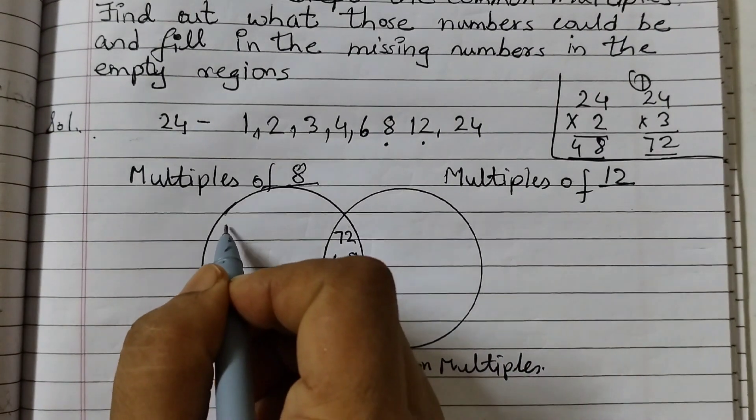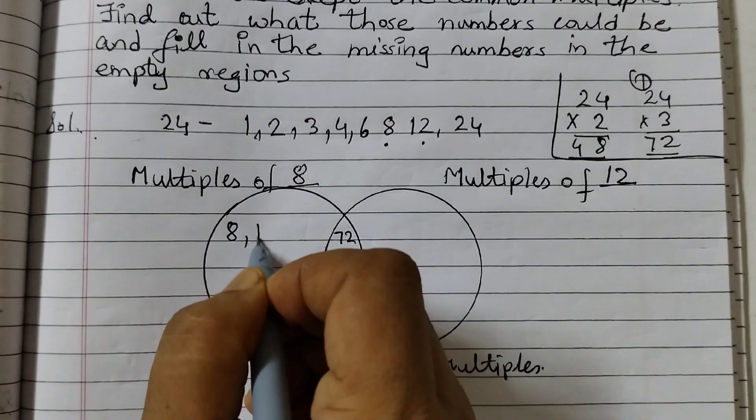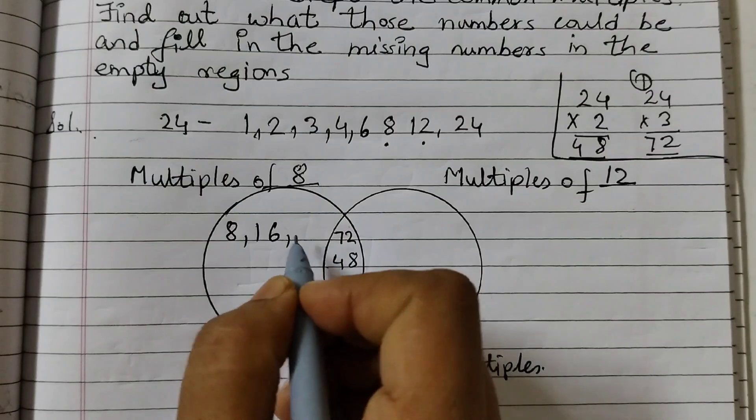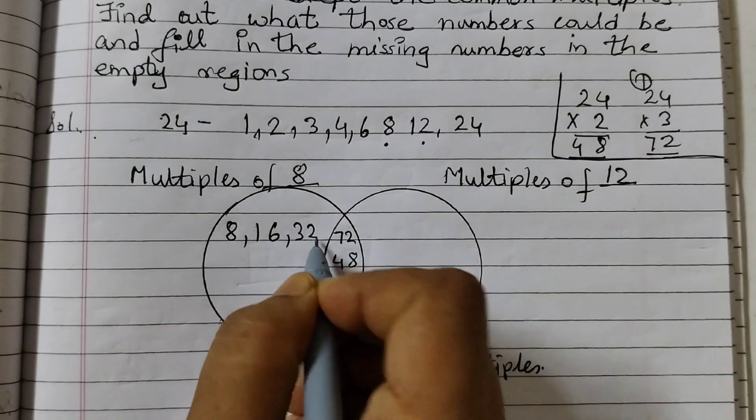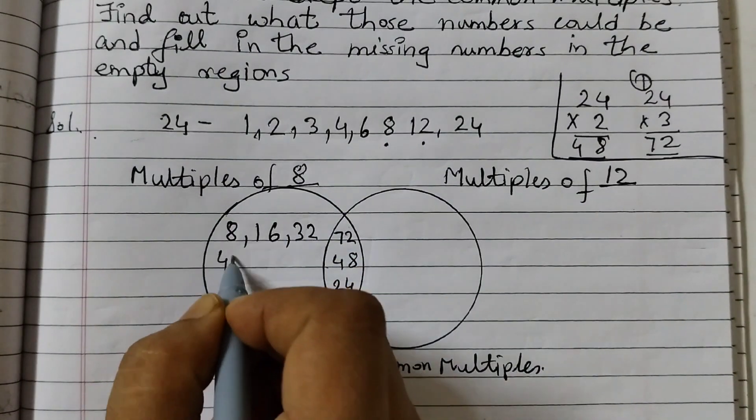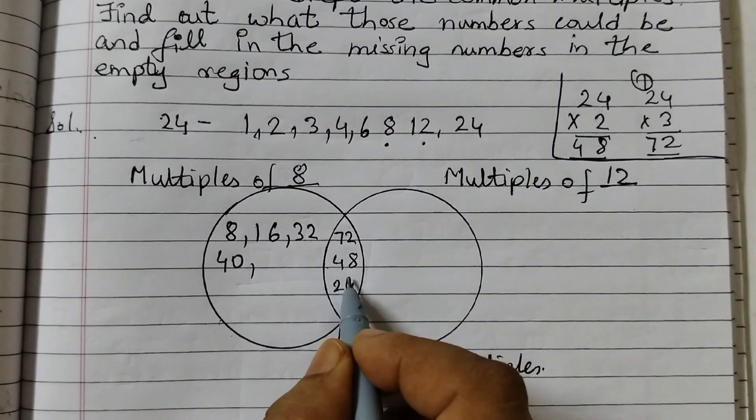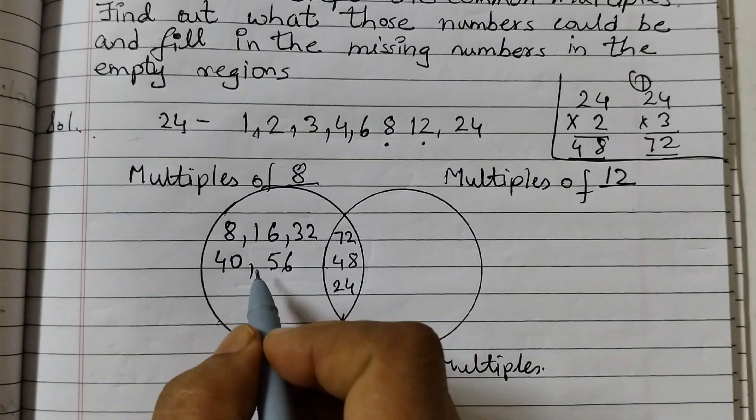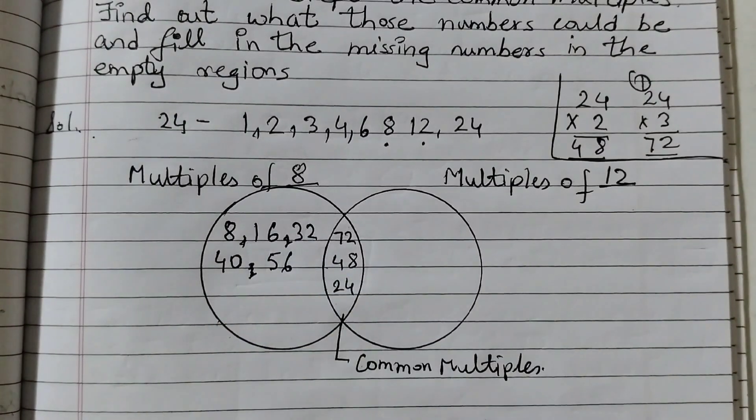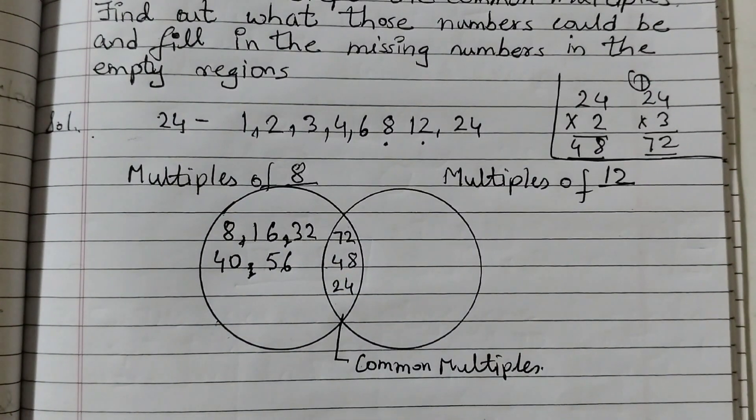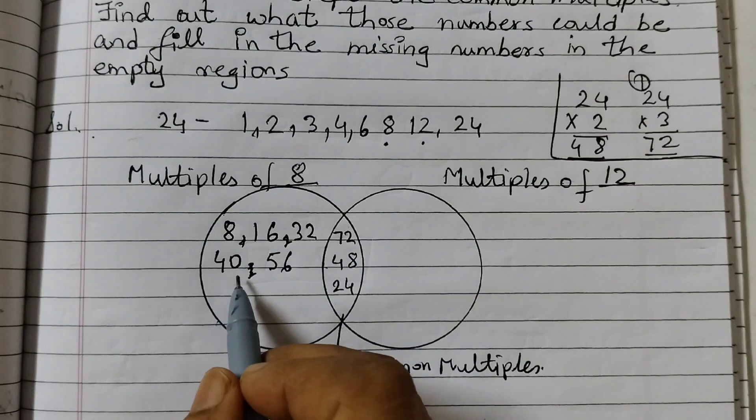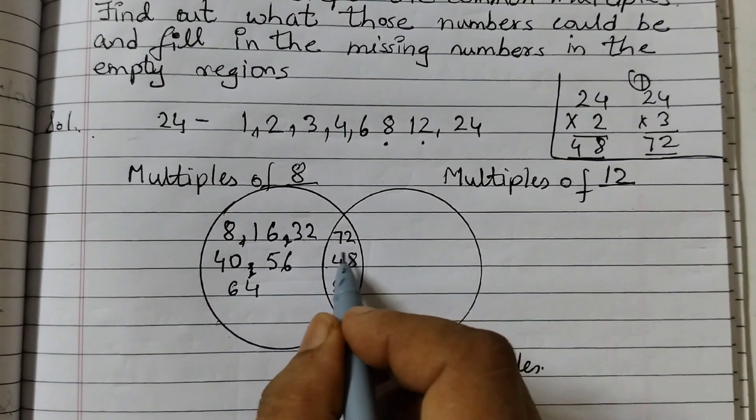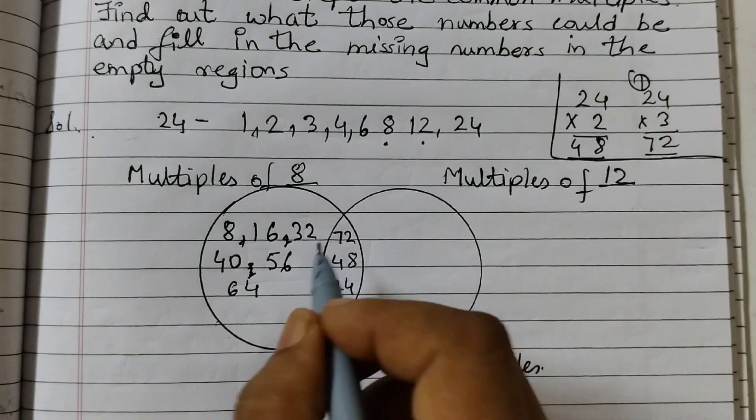Start with 8. 8 ones are 8, 8 twos are 16, 8 threes are 24 already given, 8 fours are 32, 8 fives are 40, 8 sixes are 48 already given here, 8 sevens are 56. There is no need to put the commas, the commas are not required here. 8, 16, 32, 40, 56, 8 eights are 64, and 8 nines are 72 given here.